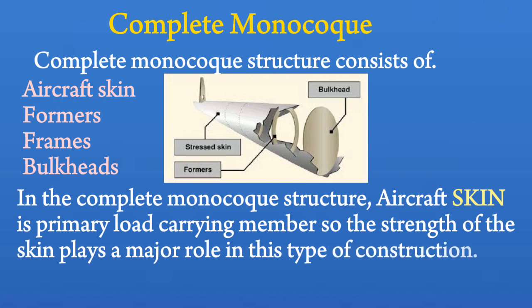In the complete monocoque structure, the aircraft skin is the primary load-carrying member, so the strength of the skin plays a major role in this type of construction.